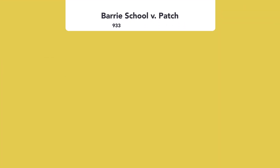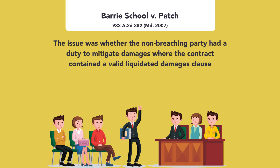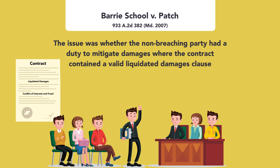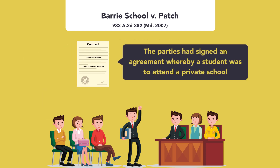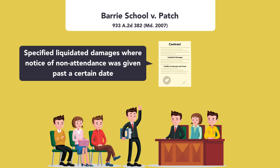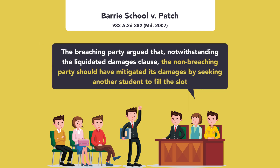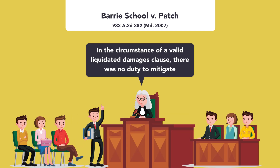In Barry School v. Patch, 933 Atlantic 2nd 382, Maryland 2007, the issue was whether the non-breaching party had a duty to mitigate damages where the contract contained a valid Liquidated Damages Clause. It is well-settled law that the non-breaching party has a duty to mitigate its damages. Here, the parties had signed an agreement whereby a student was to attend a private school. The contracts specified liquidated damages where notice of non-attendance was given past a certain date. The breaching party argued that, notwithstanding the Liquidated Damages Clause, the non-breaching party should have mitigated its damages by seeking another student to fill the slot. The court ruled that, in the circumstance of a valid Liquidated Damages Clause, there was no duty to mitigate.